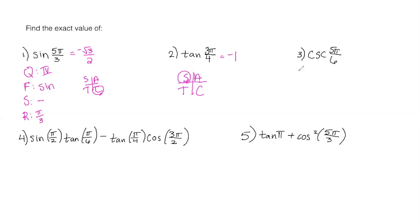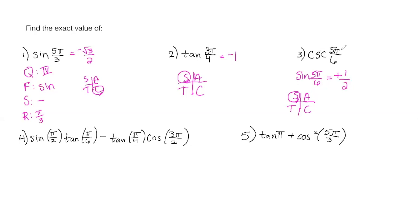For number three, cosecant is the reciprocal of sine, so I'm first going to find sine of five pi over six and then take the reciprocal. Five pi over six — using my ASTC — five over six is very close to one, so it's between one half and one, putting me in the second quadrant. Sine is positive. I ignore the five; my reference angle is pi over six. Sine of pi over six is one half, so this is positive one half. But I want cosecant, so I take the reciprocal of one half, which is two.